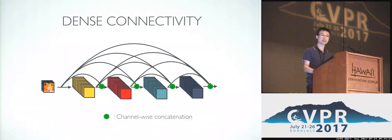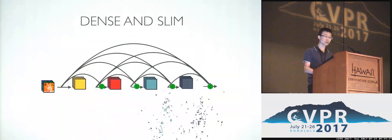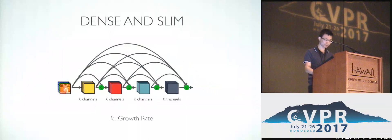In this network, as each layer has direct access to its preceding layers, there's low information bottleneck in the network. We can make each layer much thinner and obtain a much more compact model. This gives high computational efficiency and parameter efficiency. Each layer generates k feature maps, and we call k growth rate here, and k is generally quite small.